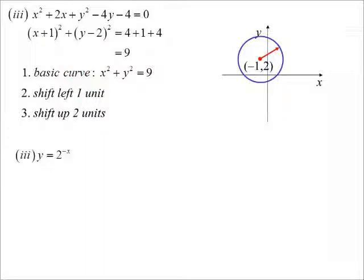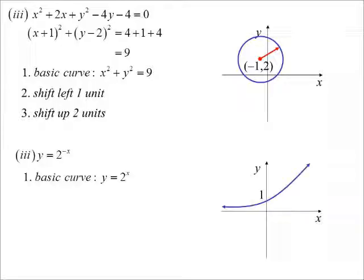2 to the power of minus x. Well hopefully we'd recognize that one anyway, but just say we didn't. The basic curve is our basic exponential. The negative is with the x this time, not negative of the whole function, so that gives me a reflection in the y-axis. And so there's 2 to the power of negative x.